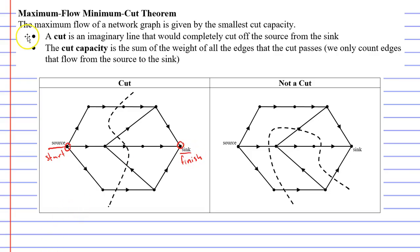Now the first thing you need to do when using the maximum flow minimum cut theorem is to make what is called a cut. And a cut is an imaginary line that would completely cut off the source from the sink. So looking at our diagram here on the left, notice that our cut, which is our dotted line here, completely separates the source from the sink. If I was to cut along this line, the water would not be able to flow from the source through to the sink because of the cut that I made.